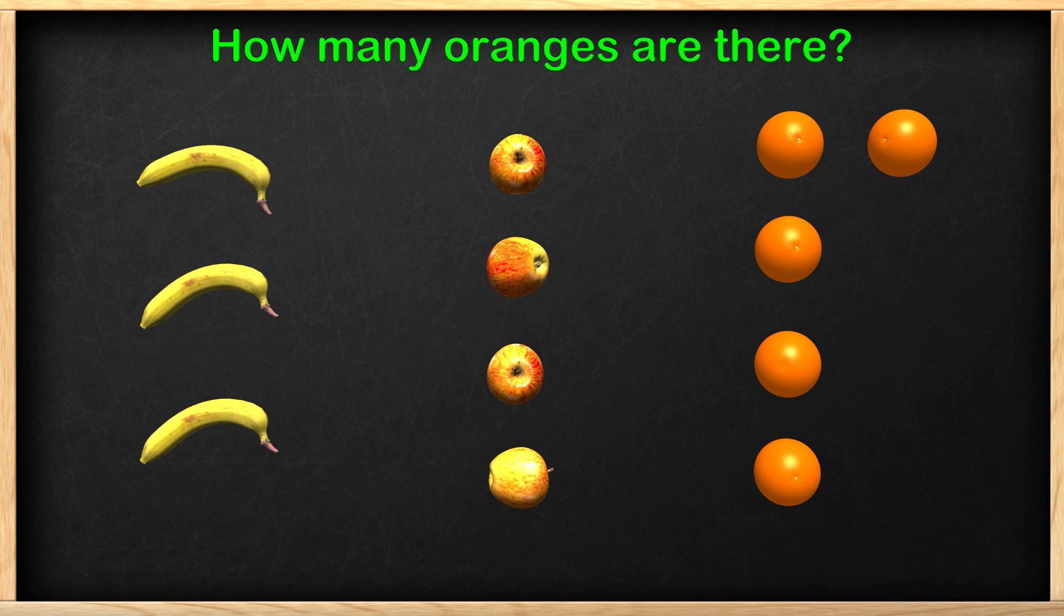Now we have all the fruit organized and the question asks how many oranges are there? Sometimes there is information in a math problem that doesn't help us find the answer. Instead it can distract us, just like I got distracted by the robot wasp.